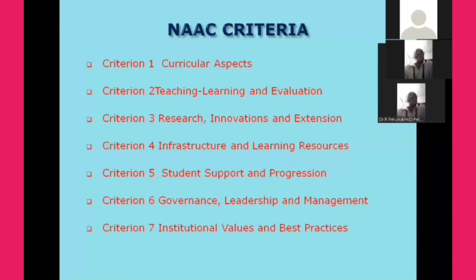Criteria 5 deals with Student Support and Progression, covering the student mentoring system, scholarships, student participation in vocational education and training, GED coaching, competitive examinations, placement training, higher education, and alumni interaction. Criteria 6 deals with Governance, Leadership and Management, covering the vision, mission, and financial aspects. Criteria 7 deals with Institutional Values and Best Practices. These seven criteria carry a total of 1,000 marks, with each criteria carrying a separate mark allocation.